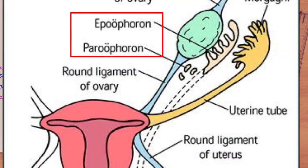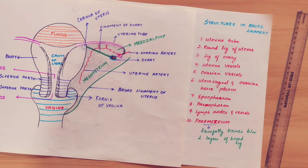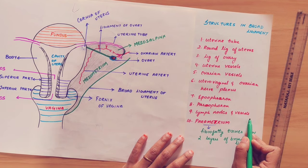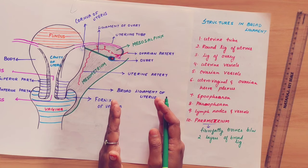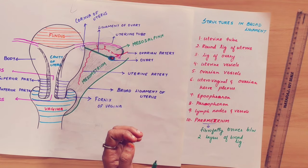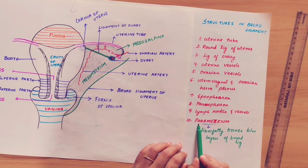Additional structures include remnants of the male reproductive system — specifically the mesonephric duct — which in females remain as underdeveloped structures called epoophoron and paroophoron. There are also lymph nodes and lymph vessels. The parametrium refers to the fibro-fatty tissue between the two layers of the broad ligament, not the layers themselves.